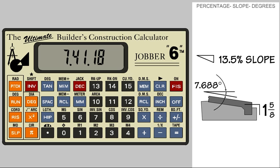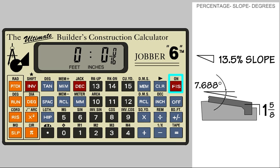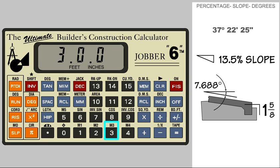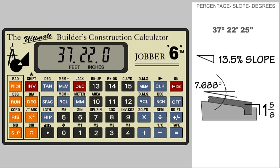Let's enter 37 degrees, 22 minutes, and 25 seconds. With the calculator on, we need to set the display to receive the DMS degree. We do this by pressing the invert key and the memory key with the letters DMS printed above it. We are now set to enter our degree: 37 degrees, 22 minutes, 25 seconds.